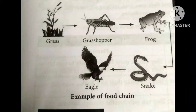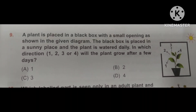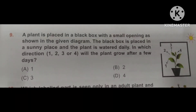Question number 9. A plant is placed in a black box with a small opening as shown in the diagram. The black box is placed in a sunny place and the plant is watered daily. In which direction — 1, 2, 3, or 4 — will the plant grow after a few days? As we know, plants grow in the direction of light. Since the box is black, sunlight does not directly enter the box. Light enters from the hole, so the plant will grow towards the hole, which is direction 2. Option B is correct.